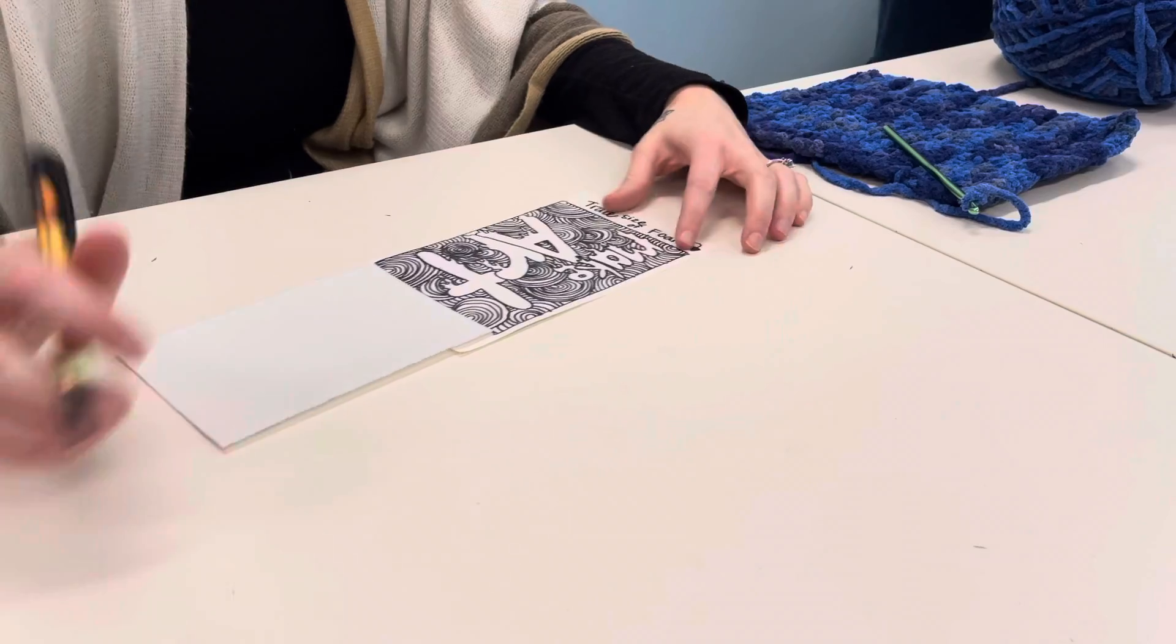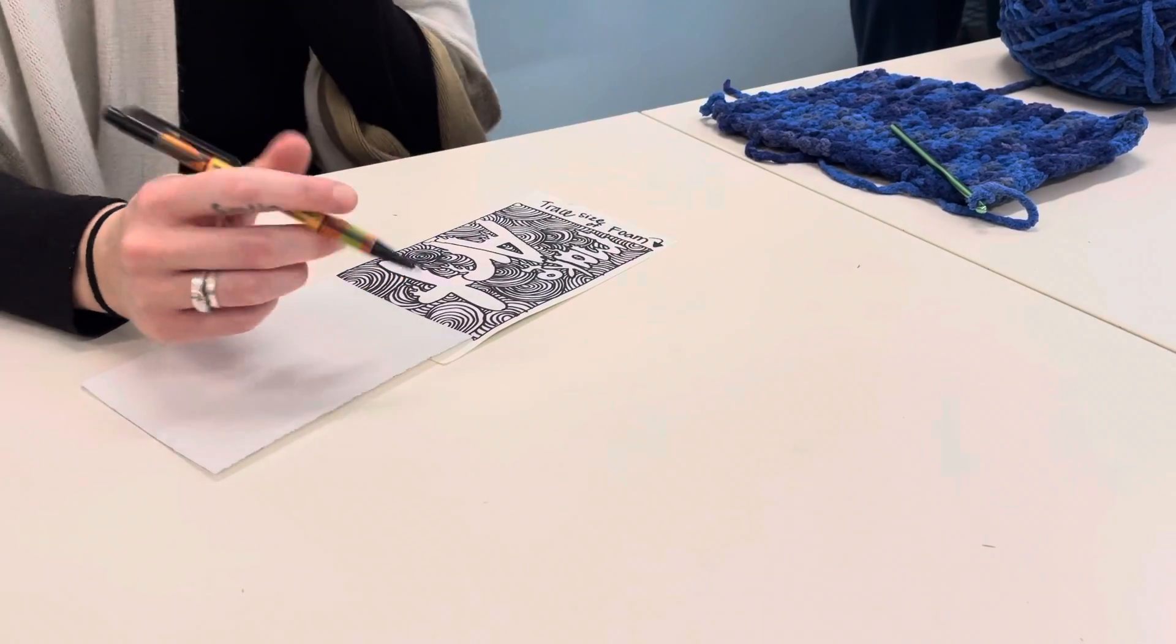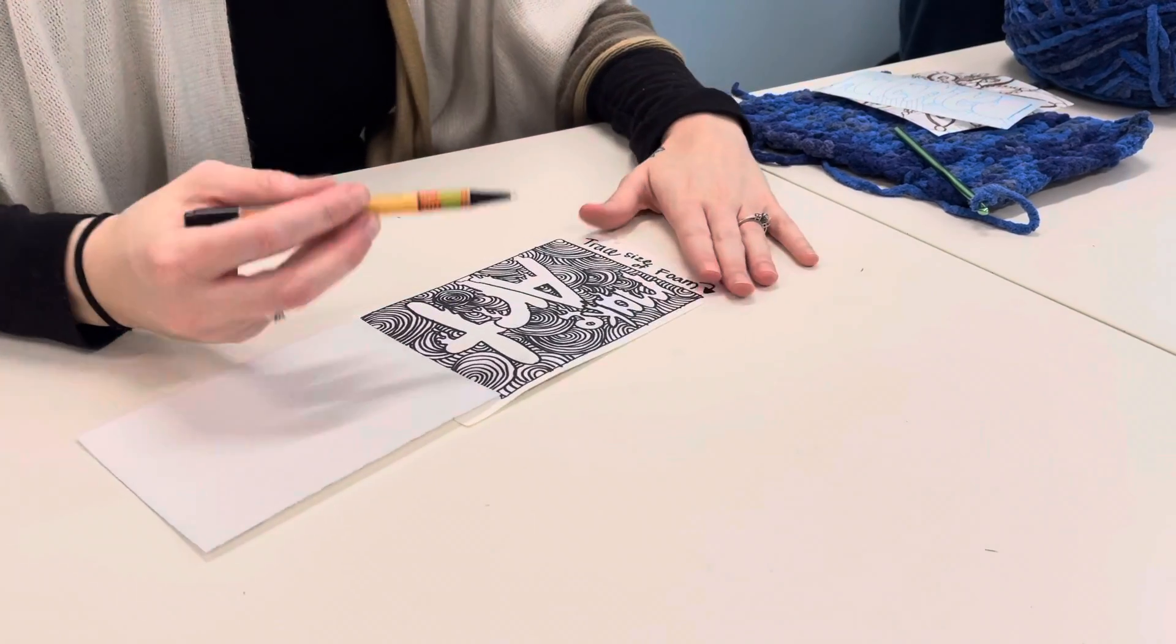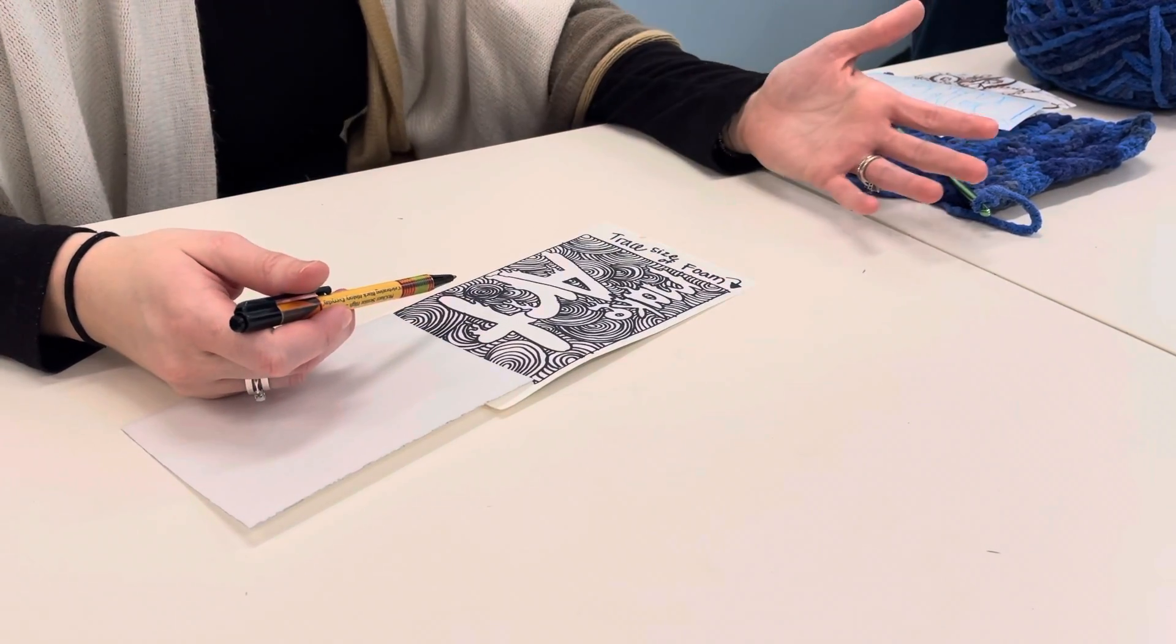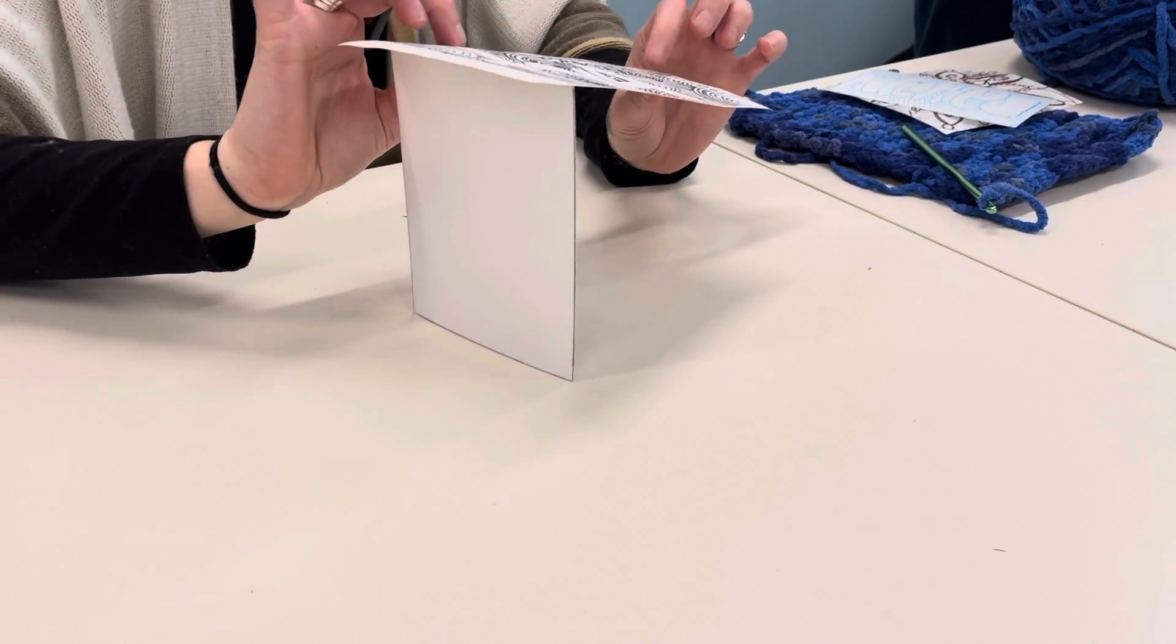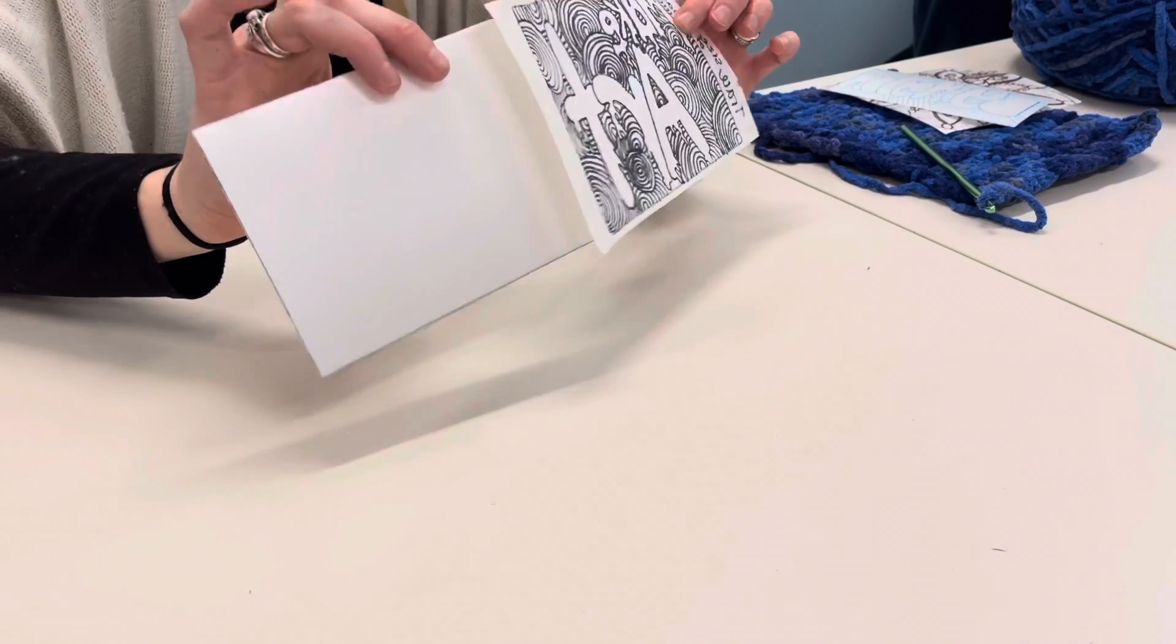The next thing you're going to do is you're going to draw a design. If you go with the words, I need you to do it in Sharpie. You can do it in pencil first, but then you need to do it in Sharpie because we need to be able to see it from the back side. So you need it to bleed through that paper.